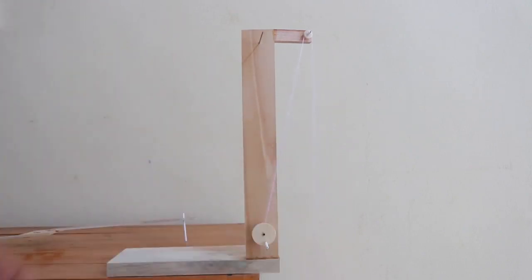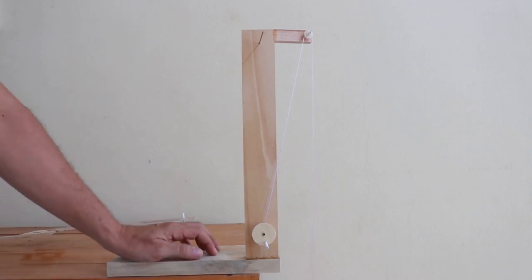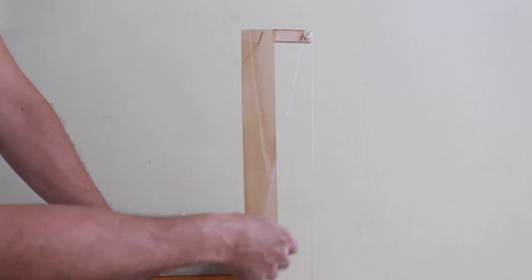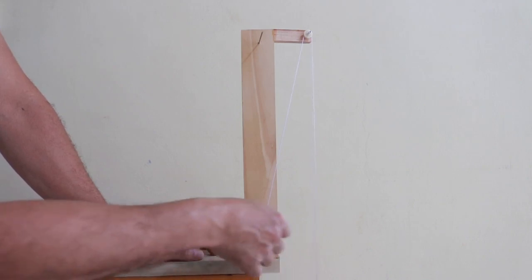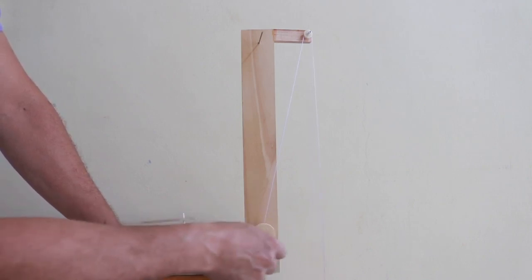In order to give power to the mechanism, we turn the wheel and the thread starts to wind in the axis. You can see how the weight is being lifted.